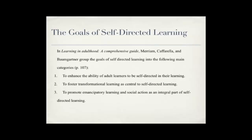If the 1970s were the decade of describing the nature of self-directed learning, then the 1980s were the decade of debating what the goals of self-directed learning should be. In Learning in Adulthood: A Comprehensive Guide, Merriam, Caffarella, and Baumgartner grouped the goals of self-directed learning into three main categories: one, to enhance the ability of adult learners to be self-directed in their learning; two, to foster transformational learning as central to self-directed learning; and three, to promote emancipatory learning and social action as an integral part of self-directed learning. The first goal follows naturally from the work of Malcolm Knowles and reflects an orientation towards humanistic philosophy — a philosophy that believes humans are inherently good and that self-improvement should be the central goal for all human beings.